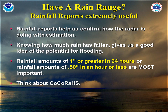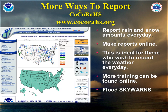If you own a rain gauge, rainfall reports can be extremely useful to us. Rainfall amounts of an inch or greater in 24 hours or less, or a half an inch of rain or more in an hour or less, are the most important observations. Rainfall reports help us confirm how the radar is doing with estimation. We also urge you, if you have the ability to report rain and snow on a consistent basis, to consider CoCoRaHS. You can learn more by visiting www.cocorahs.org. This is an ideal way for people who wish to record their weather every day.